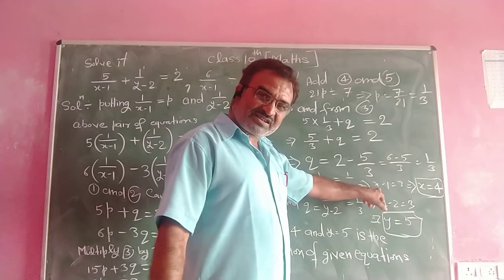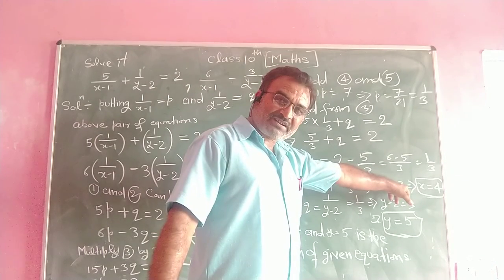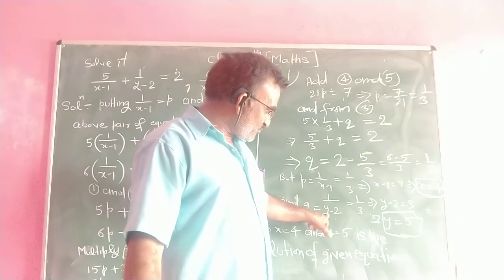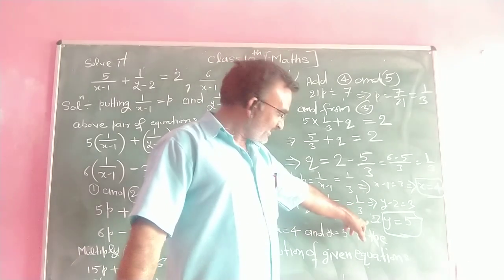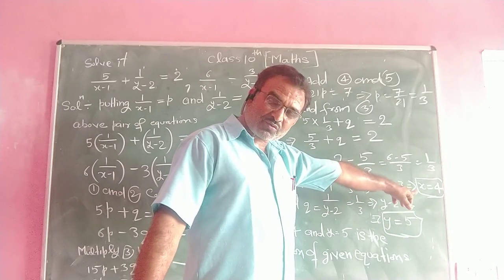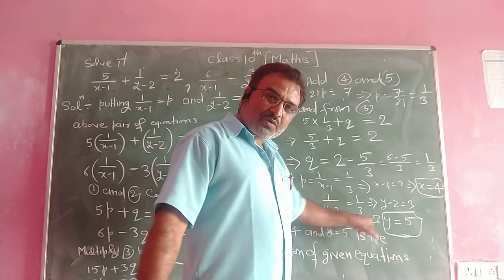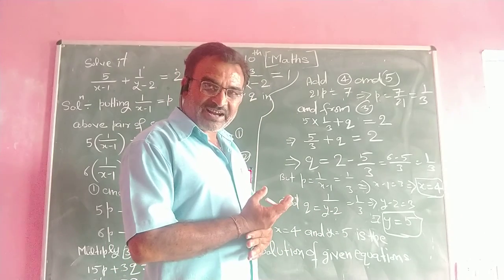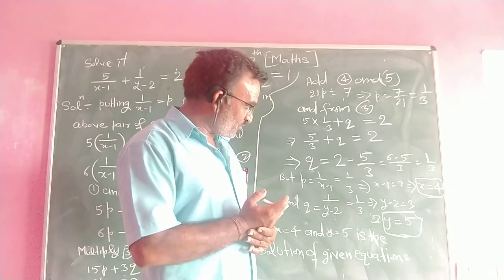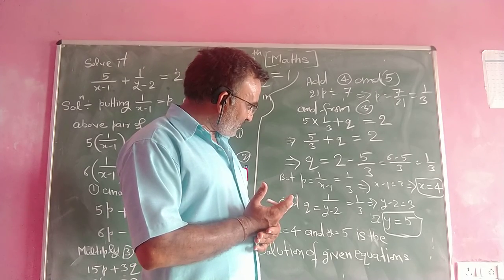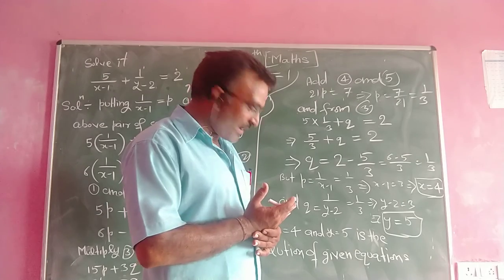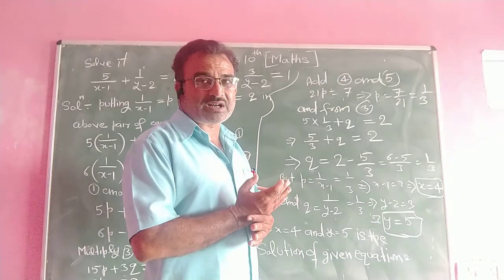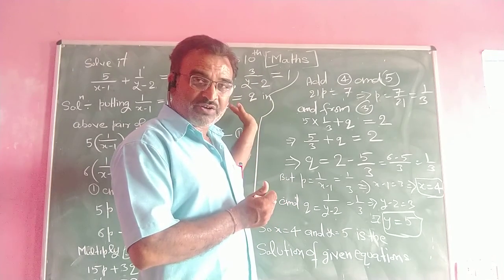Solving: x minus 1 is equal to 3, then by transposing, x is equal to 4. Similarly, q equals 1 upon (y minus 2), which equals 1 upon 3. This gives y minus 2 equal to 3, that is y equal to 5. So the value of x is equal to 4 and the value of y is equal to 5, which is the solution of the given pair of equations.